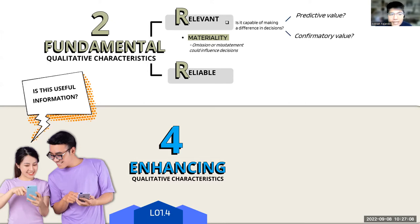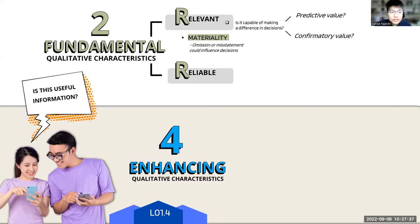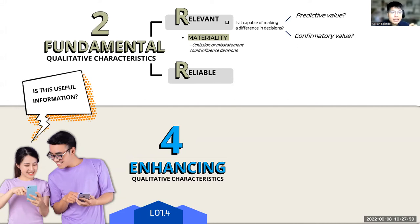Let's take an example away from accounting. Say your decision is whether to enroll in UP versus other universities. The information is: apparently, due to a budget cut, tuition at UP is no longer free. Is this relevant information? Definitely. Is it material? Definitely — because if UP is no longer free, that could change your decision of going there. That's your litmus test for relevance: if you didn't know the information, would your decision change?